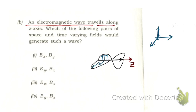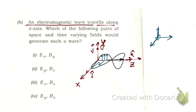Consider the z-axis, with x and y axes. Along the x-axis the unit vector is i-cap, along the y-axis it is j-cap, and along the z-axis it is k-cap. If the wave is propagating along z, which pair of E and B components is correct?